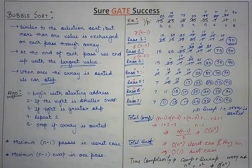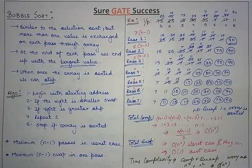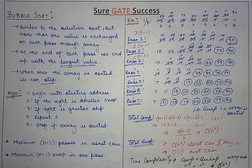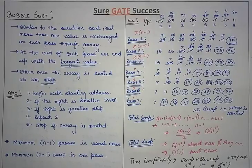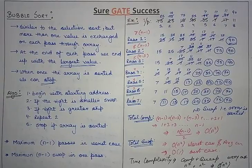While performing bubble sort, if at any pass the number of swaps is zero, we stop the algorithm because the array is already sorted. With this condition, the best case becomes O(n). As you can see, the time complexity is O(n²) in general, but when the array is already sorted, the best case becomes O(n). Thanks for watching — please like, comment, subscribe, and share with friends to help them also. Thanks.